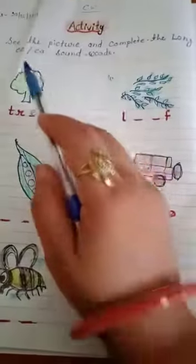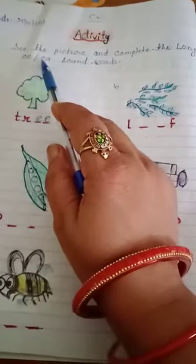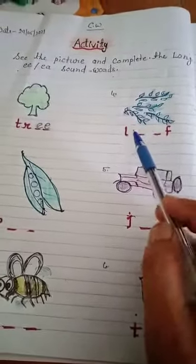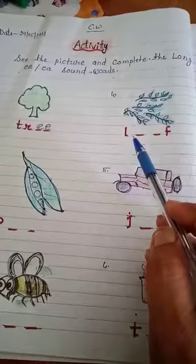L-E-A, write here E-A sound. So you have to write here E-A sound. So complete the word, you have to read the complete word leaf.